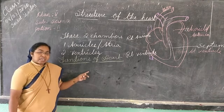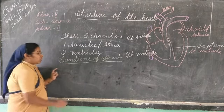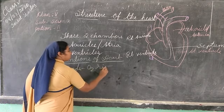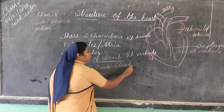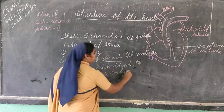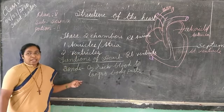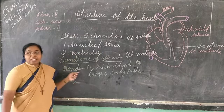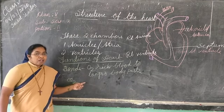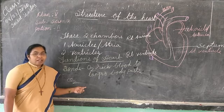The blood which comes from the lungs — the heart is pumping blood to the arteries. The heart also receives carbon dioxide-rich blood which comes from the body parts, and it sends that blood to the lungs for purification. In the lungs the blood is purified and then it is sent to the body parts.